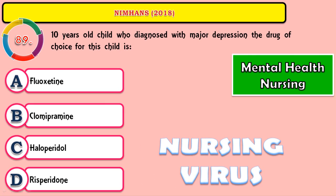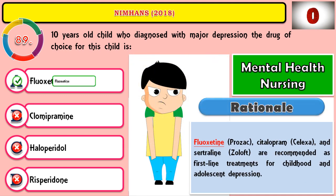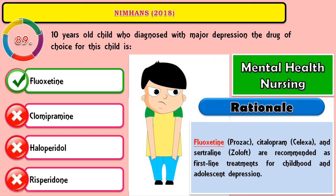Question 89: A ten-year-old child diagnosed with major depression — the drug of choice for this child is? The answer is fluoxetine, which belongs to the SSRI group and is very helpful in cases involving children. Along with fluoxetine, other drugs such as citalopram and sertraline can also be recommended as first-line drugs for childhood depression.